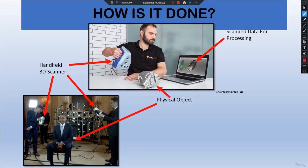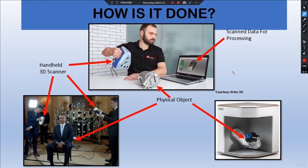Here we see a former US president being scanned using handheld scanners, where the human figure acts as the physical object. This means we can also reverse engineer a human body with the aid of CAD software. We also see a stationary scanner being used rather than a handheld one, meaning it is not portable, and the physical object is kept in place to be scanned.